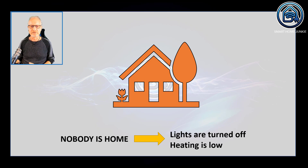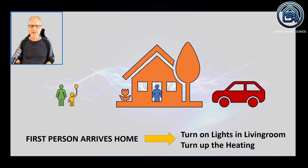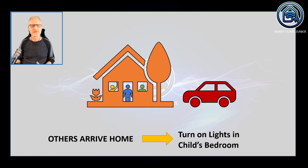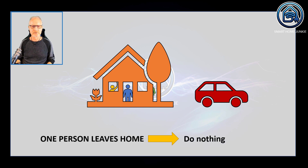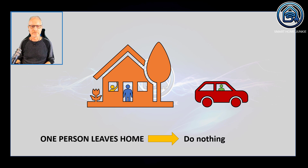We are starting with an empty house. Nobody is home, lights are turned off and the heating is low. Now the first person enters the house — he arrives and wants the lights in the living room to turn on automatically and the heating also turns on automatically. Now the other people are arriving home and we want the lights in the child's bedroom to turn on also. And now one person is leaving the house — we don't want to do anything because you want to keep the heating up and the lights on. But if the other people also leave the house then you want to turn off the lights and turn down the heating.